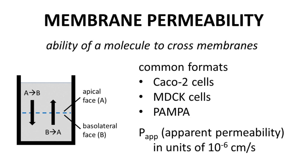Membrane permeability is normally reported as Papp, apparent permeability, in units of 10⁻⁶ centimeters per second. There are no fixed values for good or bad permeability, but often apparent permeability for a drug is at least 10 × 10⁻⁶ centimeters per second. A lower permeability can prevent adequate absorption to achieve efficacious exposure of a drug.